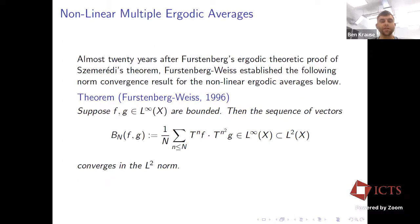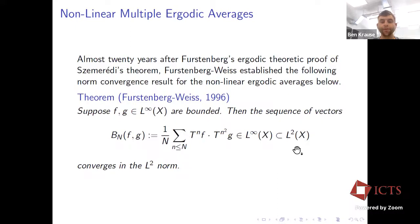It took a lot of effort to go from the Szemerédi situation — averages along arithmetic progressions — to averages along polynomial progressions. The departure point was Furstenberg-Weiss in 1996, about 20 years after Furstenberg. The statement is that whenever F and G are bounded, the sequence of nonlinear bilinear averages converges in L² norm. I take two bounded functions, form their product, form the average — it stays bounded in L∞, so it's an L² vector — and these averages converge to some L² vector in the vectorial sense.